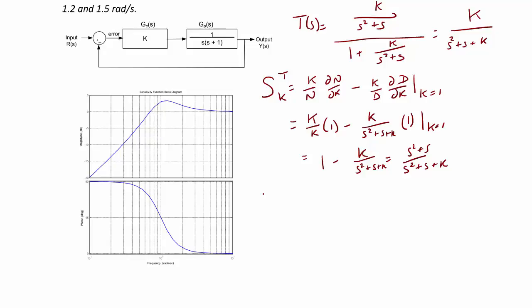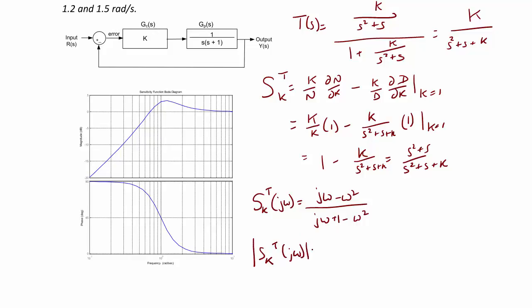Now to find the magnitude: we evaluate the sensitivity function at s equal to jω, giving jω minus ω² over jω plus 1 minus ω². Remember, we've put in the nominal value that k is equal to 1. The magnitude of the sensitivity function equals the square root of ω² plus ω⁴, divided by the square root of the quantity (1 minus ω²)² plus ω².